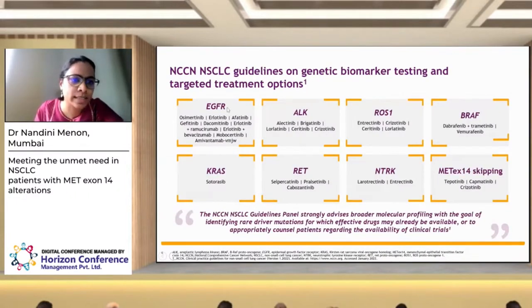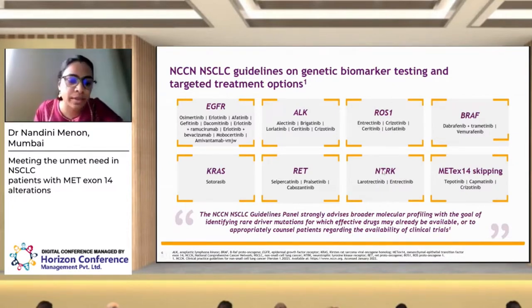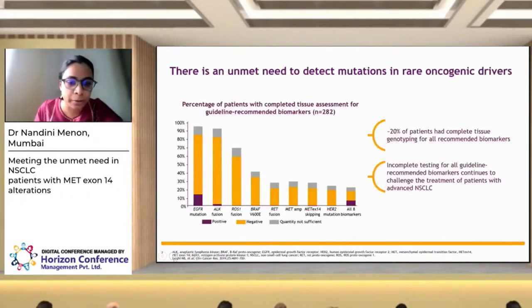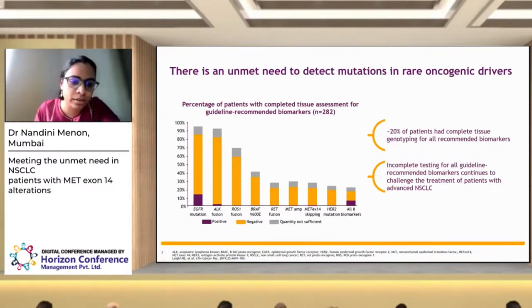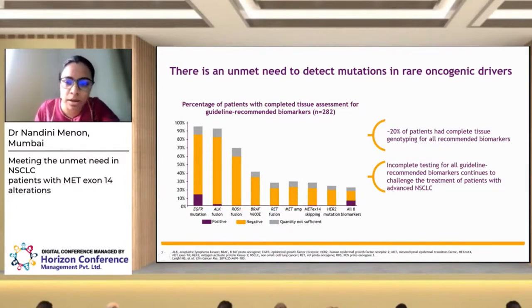Most guidelines, including the NCCN, recommend a basic panel of testing for oncogenic drivers in non-small cell lung cancer. EGFR, ALK, ROS1, BRAF, KRAS, RET, NTRK, and MET exon 14 skipping mutations all have drugs approved for their targets. In practice, however, only 20% of patients in Western settings had complete tissue genotyping in one study, and in resource-poor settings this is far lower.